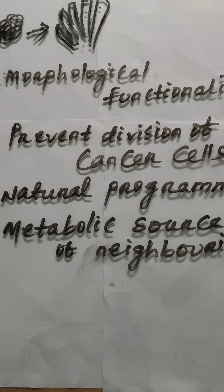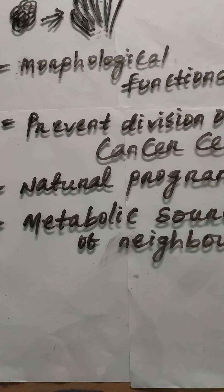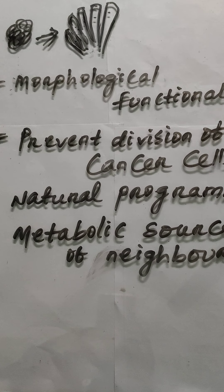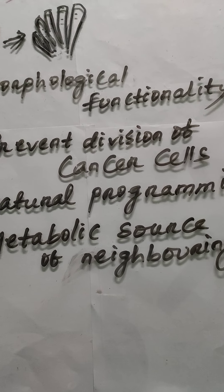The fourth need is natural programming — it is determined by the genetic ability of the individual, that is, how many times a cell can divide. When the cell enters into any type of anomalies, it is immediately disturbed. The fifth need is as a metabolic source of energy for neighboring cells. When cells enter into apoptosis, the cell fragments are engulfed by macrophages or neighboring cells, becoming a source of metabolic energy.